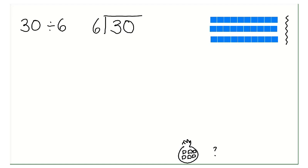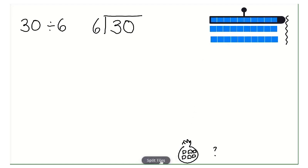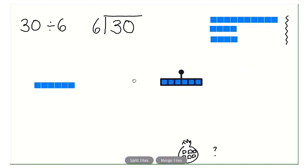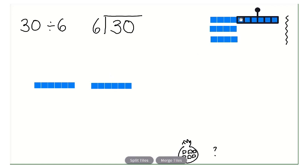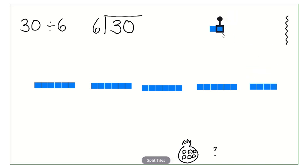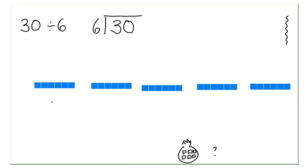So let's divide them into groups of six. I'll split all my tiles into ones because we can't do it while they're in tens. I want six in each bag: one six is six, two sixes are twelve, three sixes are eighteen, four sixes are twenty-four, and five sixes are thirty. So that's one bag, two bags, three bags, four bags, five bags — thirty divided into sixes gives me five.